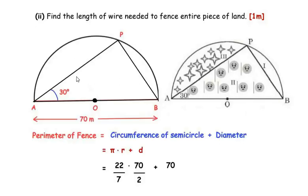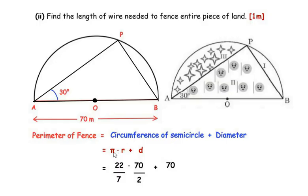Referring to the equivalent figure, AB is the diameter and APB represents the circumference of the semicircle. The length of wire needed equals the perimeter of the fence, which is the circumference of the semicircle plus the diameter. The formula for the circumference of a semicircle is pi times radius, plus diameter d. Taking pi as 22/7.